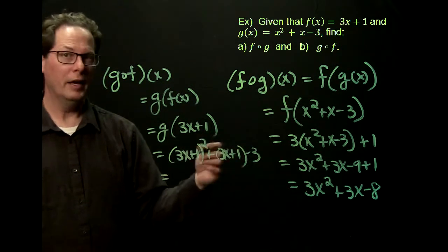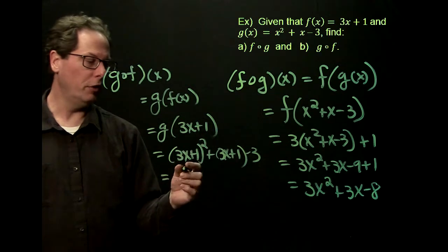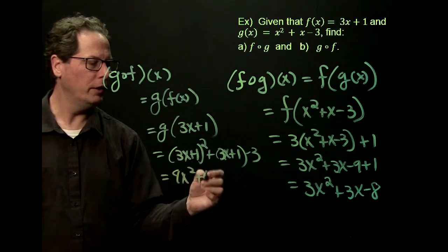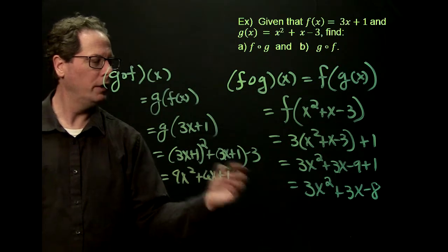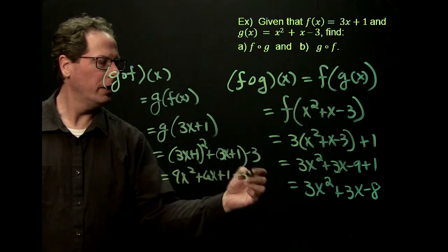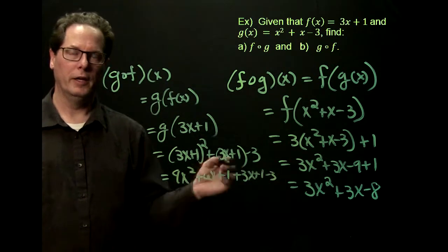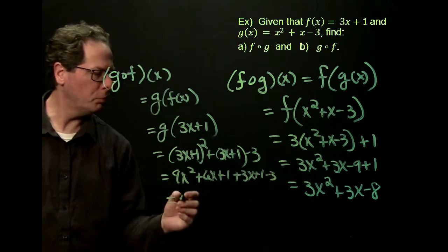Now we'd like to go ahead and do some simplification of all this. So let's go ahead and foil everything out. You get 9x squared, you get a 6x, you get a plus 1. We have a 3x, we have a 1, and a minus 3.